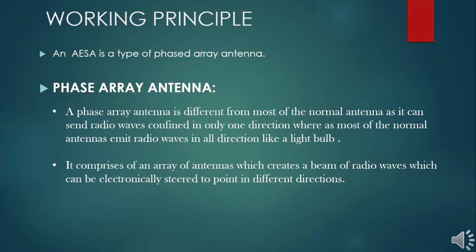An AESA is a type of phased array antenna. A phased array antenna is different from most normal antennas as it can send radio waves confined in only one direction, whereas most normal antennas emit radio waves in all directions, like a light bulb.